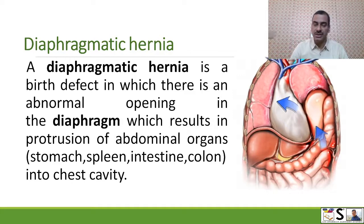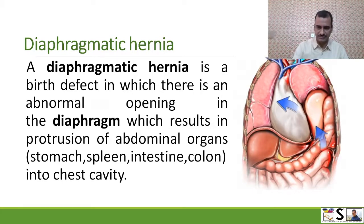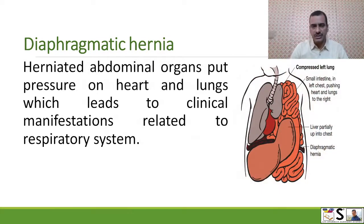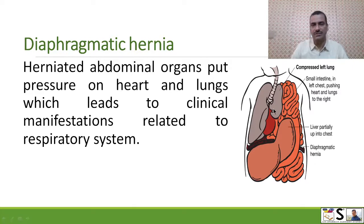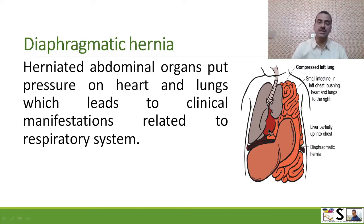These organs may include the stomach, spleen, and intestine moving into the chest cavity. Herniated organs from the abdomen, now present in the chest cavity, put pressure on vital organs such as the lungs and heart, which leads to clinical manifestations related to the respiratory system.